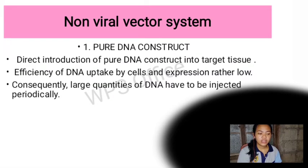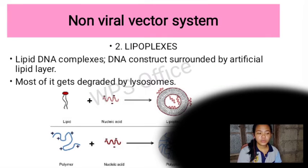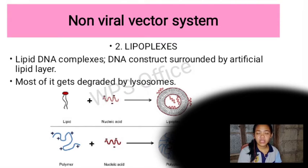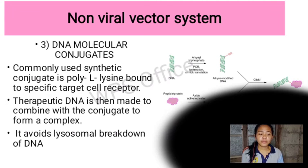Efficiency of DNA uptake by cells and expression is rather low for pure DNA constructs. Consequently, large quantities of DNA have to be injected. The second non-viral vector is lipoplexes — lipid-DNA complexes, which are DNA constructs surrounded by an artificial lipid layer. Most of it gets degraded by the lysosomes.